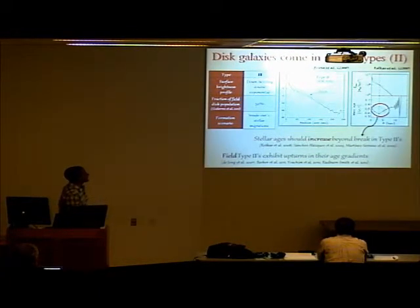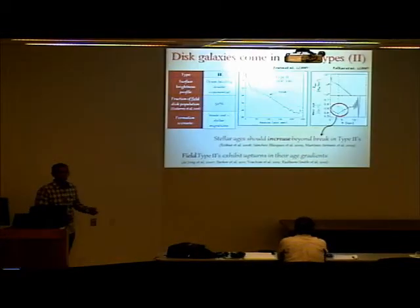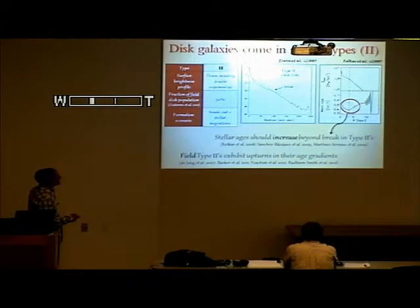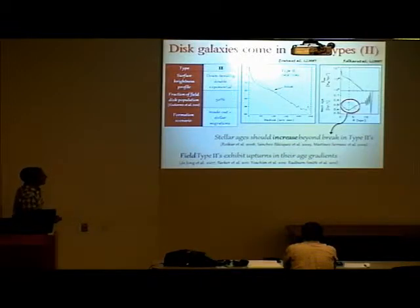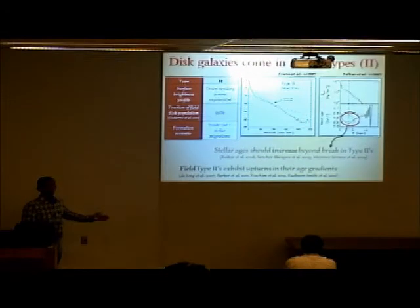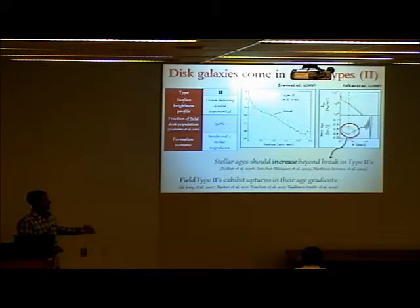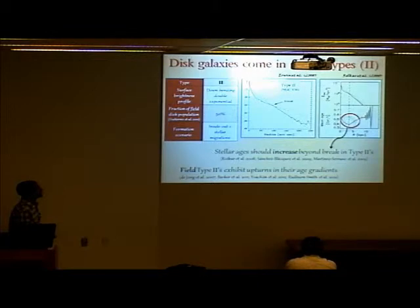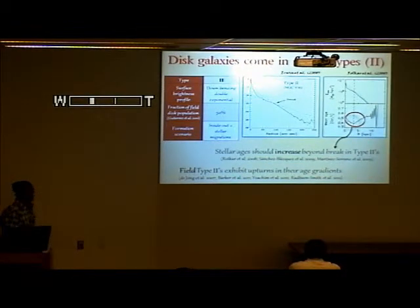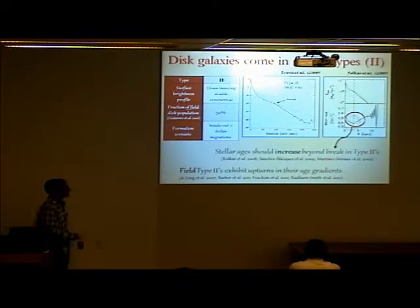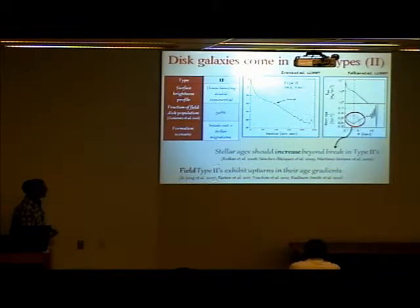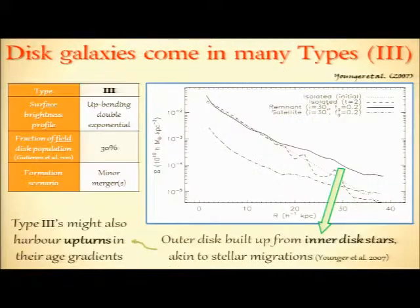A consequence of their scenario is that the stellar ages within these galaxies should increase beyond the location where the light profile changes slope or breaks, owing to the fact that stars in these outer regions did not form there — they actually migrated there — and that the length scales for migration increased with stellar age. The Roshkar model has received some support from observations which found that the age gradients of type 2 disks in the field exhibit significant upturns in their stellar ages.